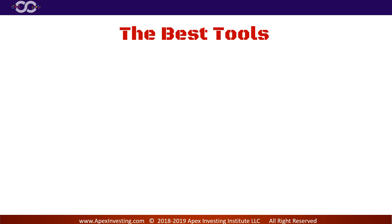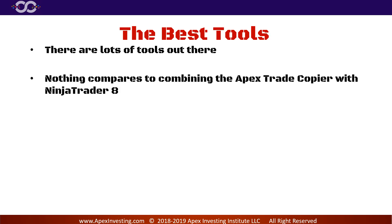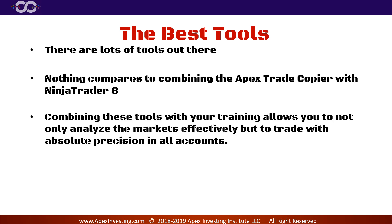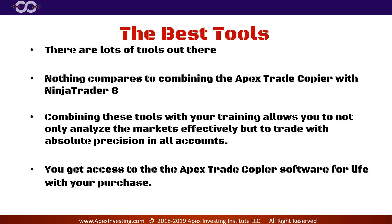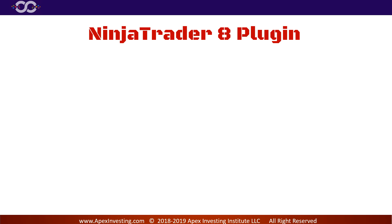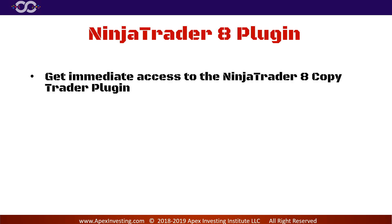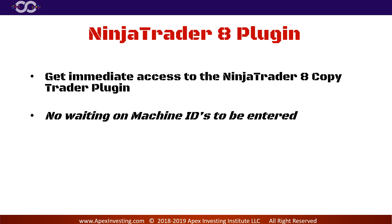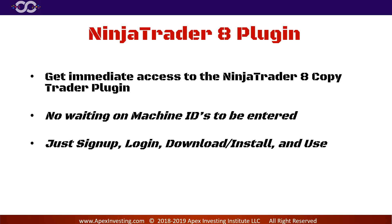This is literally one of the best tools. There's a lot of tools out there for NinjaTrader 8, but nothing compares to combining the Apex Trade Copier with NinjaTrader 8. Combining these tools will allow you to not only analyze the markets effectively, but to trade with absolute precision in all accounts, focusing on one chart. You get access to the trade copier software for life with your purchase — it is not a subscription, it is a lifetime purchase. You get immediate access to the NinjaTrader 8 copier plugin. There's no waiting on machine IDs with our automation verification system. You just sign up, log in, download, install, and use it.